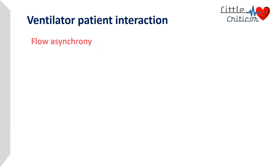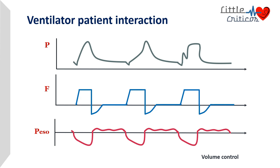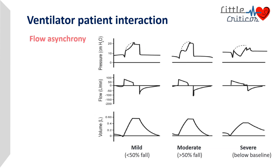Flow asynchrony is one where there is inadequate flow — the flow rate is too low to meet the patient's respiratory demand. In a volume-controlled breath, one can observe a typical scooping of the inspiratory limb of the pressure-time scalar when flow is inadequate. In conditions of higher inadequacy, a typical double-hump appearance may also be seen. Flow asynchrony can be classified as mild (less than 50% fall), moderate (more than 50% fall), or severe (inspiratory limb falls below baseline).